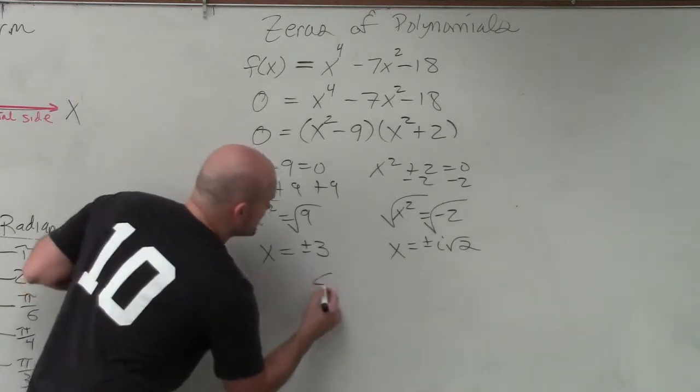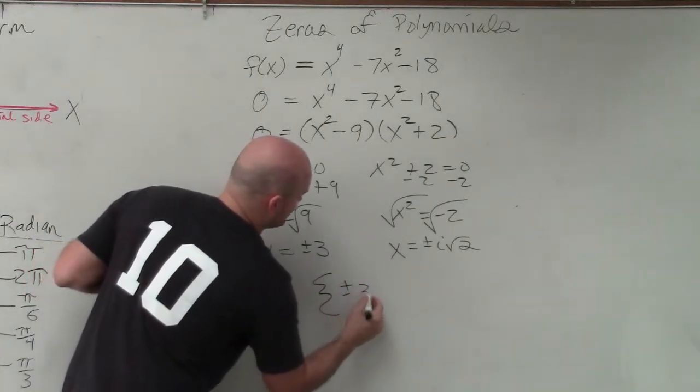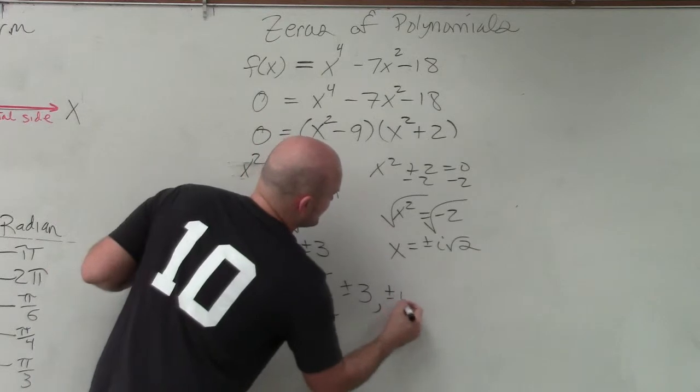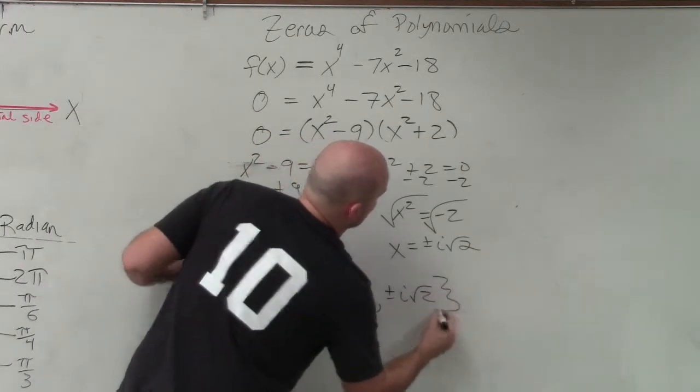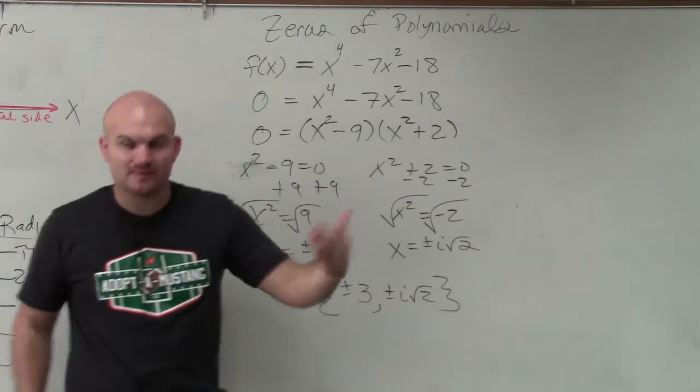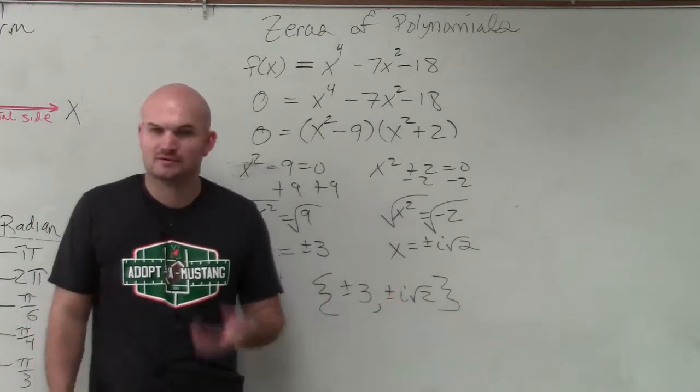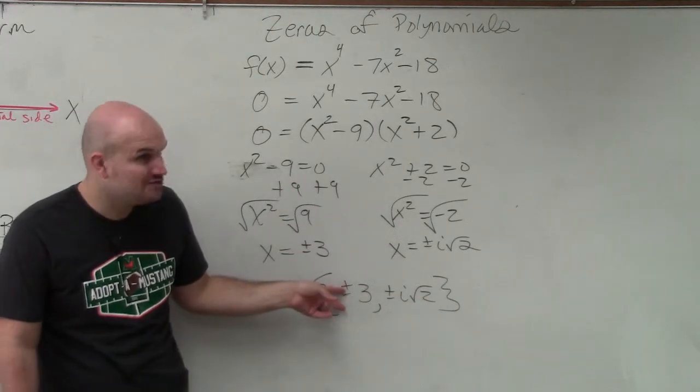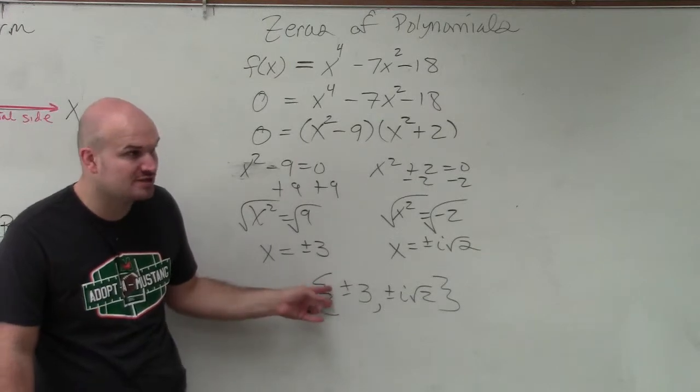So in my solution set, I have plus or minus 3 comma plus or minus i square root of 2. Now, let's again go and think about this. How many x-intercepts do I actually have though? Two. I only have two x-intercepts because those are the only two real solutions.